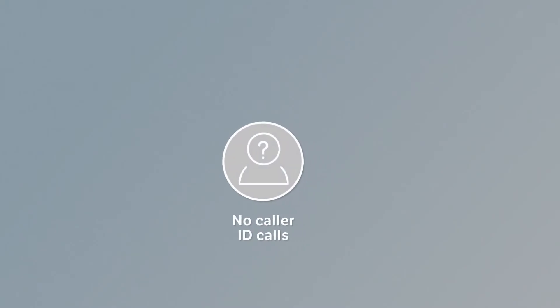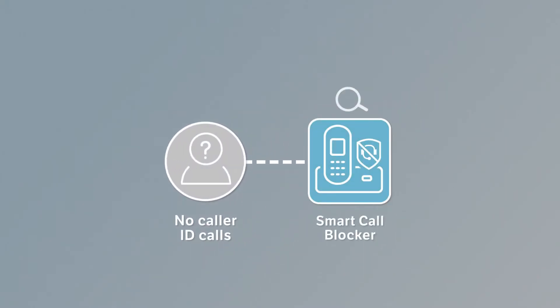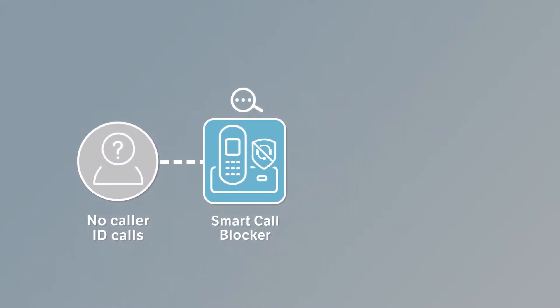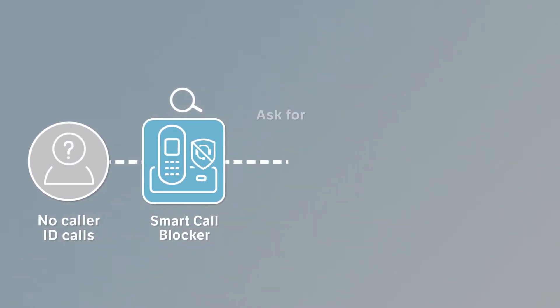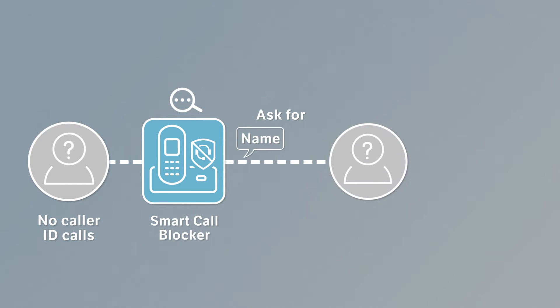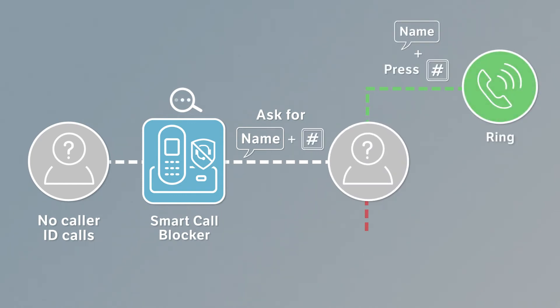With this setup, Smart Call Blocker will screen the calls by asking the caller to record their name and press the pound key.